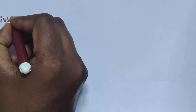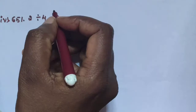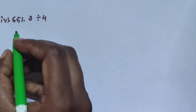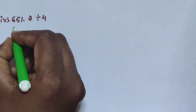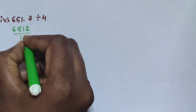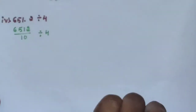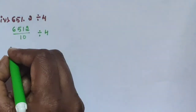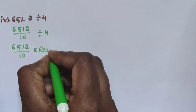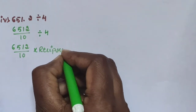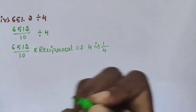Sub question 4: 651.2 is divided by 4. Using the same process, 651.2 has one digit on the 10th place, so divide by 10. Write as 6512 divided by 10, then divide by 4. The division sign can be removed using a reciprocal of fraction. The reciprocal of 4 is 1 by 4.